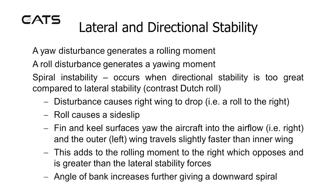Lateral and directional stability are coupled: a yaw disturbance generates a rolling moment, and a roll disturbance generates a yawing moment. Spiral instability occurs when directional stability is too great compared to lateral stability. A disturbance causes the right wing to drop — a roll to the right — which causes a sideslip. Fin and keel surfaces yaw the aircraft into the airflow to the right, and the outer left wing travels slightly faster than the inner wing. This adds to the rolling moment to the right, which opposes and is greater than the lateral stability forces, so the angle of bank increases further, leading to a downward spiral.